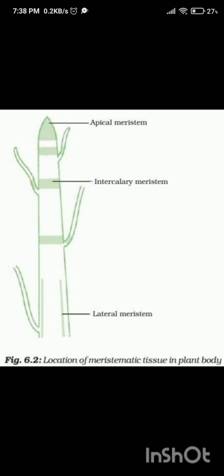These tissues provide structural support and help in transporting water, nutrients, and sugars throughout the plant. In real life, you can observe this by looking at the trunk of a tree or the stem of a woody plant. As the plant grows over the years, its stems or trunk becomes thicker and stronger. This increase in thickness is due to the lateral meristem, which produces secondary tissues like wood and bark that provide support and protection to the plant. That is all about meristematic tissues.